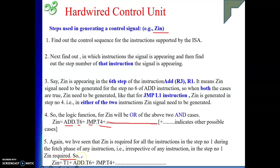What I mean is that if a particular signal is appearing in a particular state number for all the instructions, then I am going to write the state number only. This is how we are writing the logic function for a particular signal.